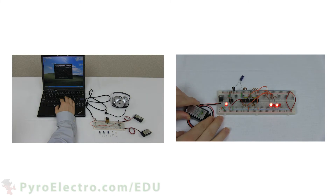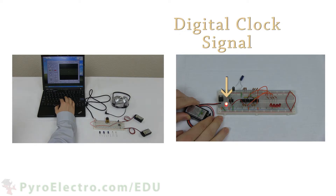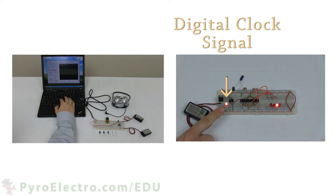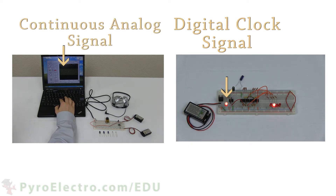If you have been following along with the PyroEDU courses, you have no doubt noticed that building analog electronics and digital electronics each require a different way of thinking. Our digital electronics relied on a clock signal to drive them, and there were only two possible states: logic 0 and logic 1, which we always defined as plus 5 volts and plus 0 volts.